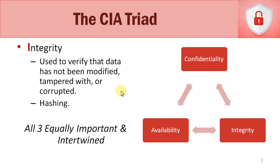Now let's talk about integrity. We talked about confidentiality — making sure people who shouldn't have access to data don't get it. Integrity means that whether we have data at rest, sitting on a server or hard drive or USB thumb drive, or data in use going across the network, we need to verify that the data has not been modified, tampered with, or corrupted. We want to make sure only authorized people can modify it.